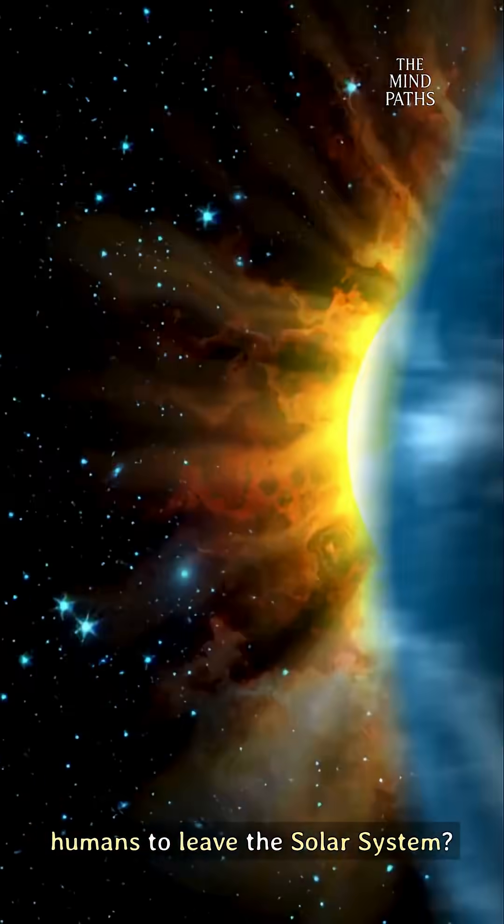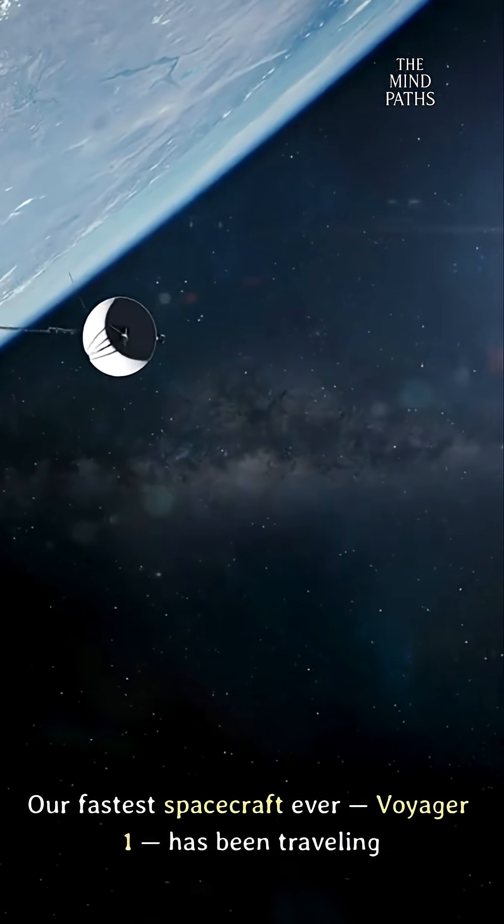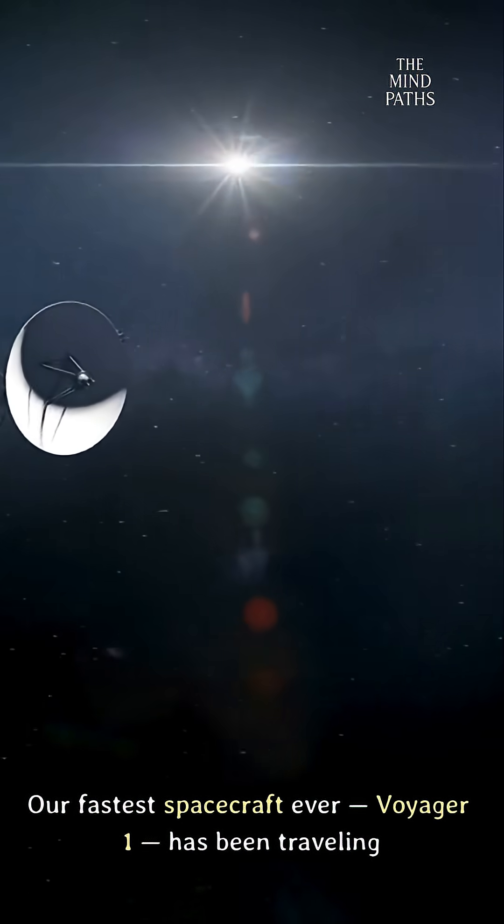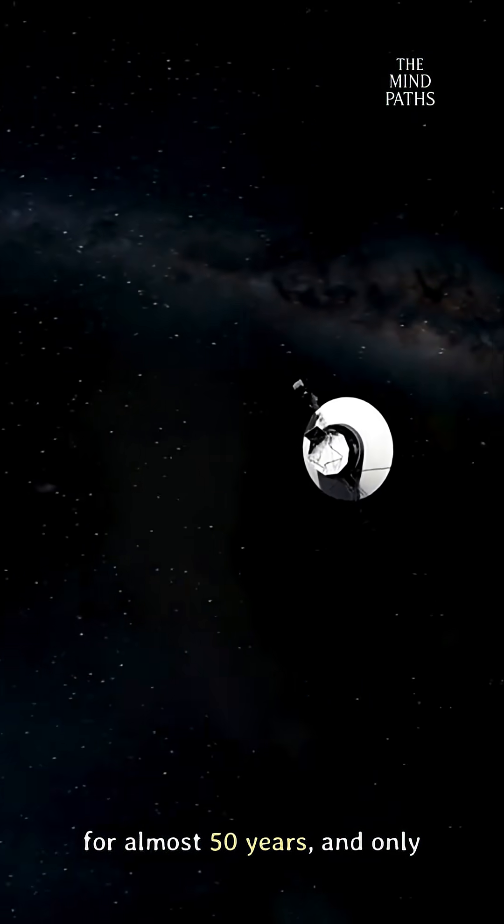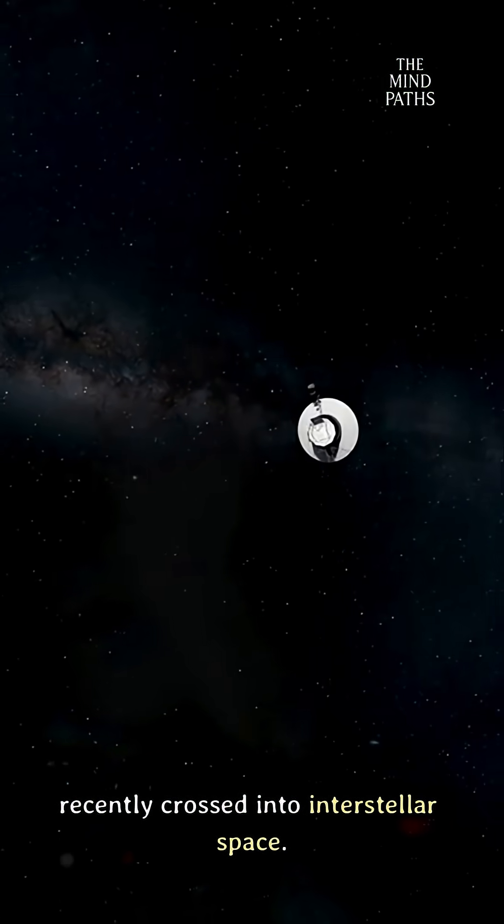How long would it take for humans to leave the solar system? Our fastest spacecraft ever, Voyager 1, has been traveling for almost 50 years and only recently crossed into interstellar space.